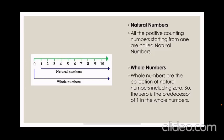and numbers starting from 0 and so on is the group of whole numbers. So if we include 0 with the natural numbers, we get whole numbers.